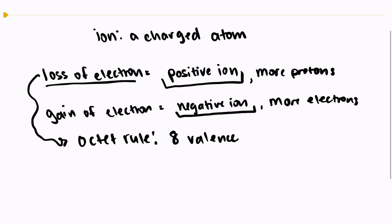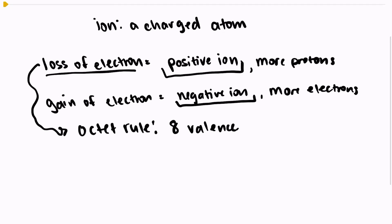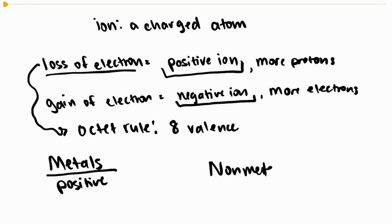So with our two types of ions, there are some trends that we need to know. Metals in general on the left-hand side of the periodic table will form positive ions. They're going to lose electrons to become stable. Non-metals on the right-hand side of the periodic table will gain electrons to become negative ions. So metals will lose electrons, non-metals will gain electrons.